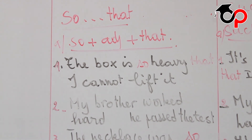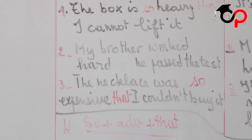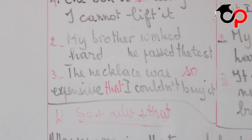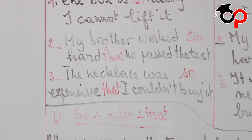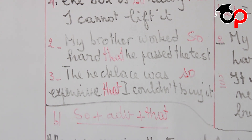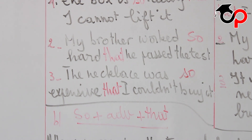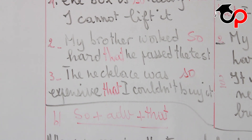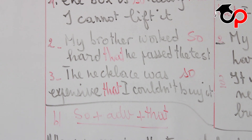Example 2: my brother worked so hard that he passed the test — meaning he succeeded in the test. With such...that, we turn it to: my brother was such a hard worker that he passed his test. The verb became a noun — worker — and hard remains an adjective.